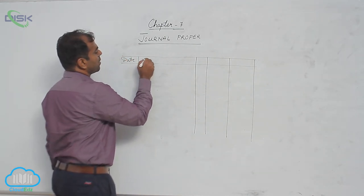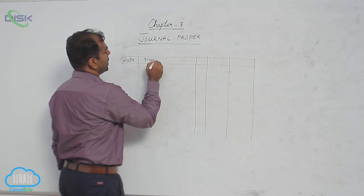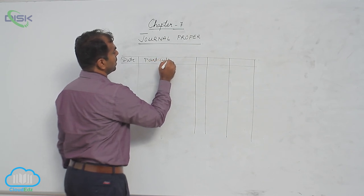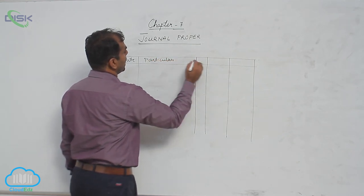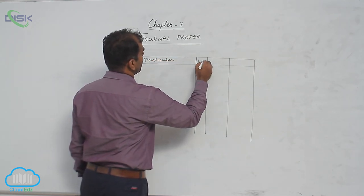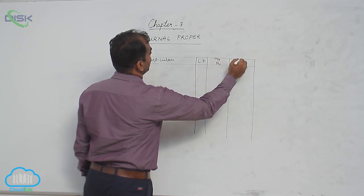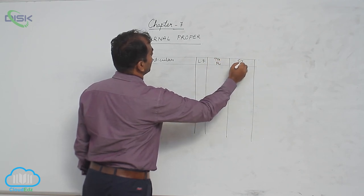So this is the format of your journal proper, wherein you have date, particulars, LF, and a debit amount column and credit amount column. This is what you have already learned.